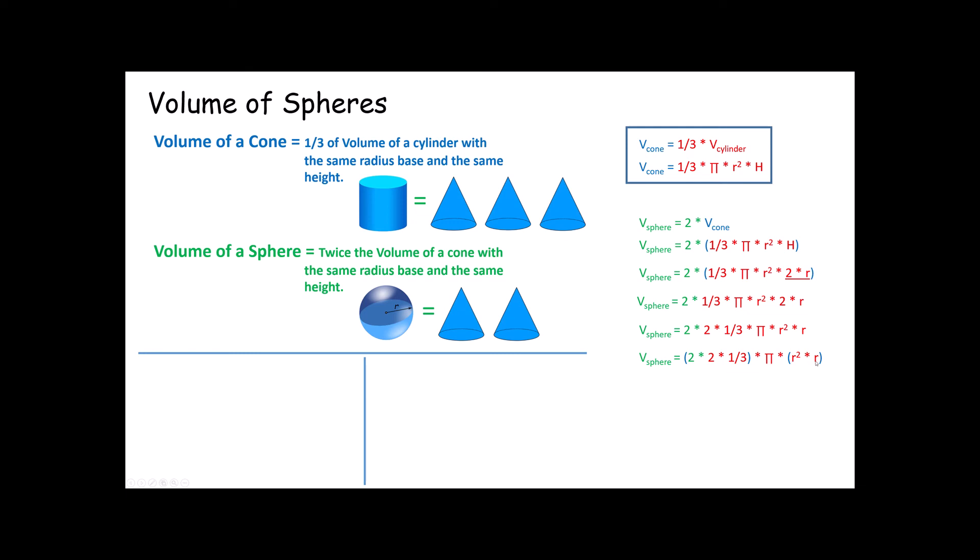r squared times r is r cubed, and I can now write this as four thirds times pi times r cubed. These parentheses now don't have any operations inside of them, so we're not really doing anything, and we can get rid of them. And you get four thirds pi r cubed. This is the formula you're likely to read in a textbook about the volume of a sphere.